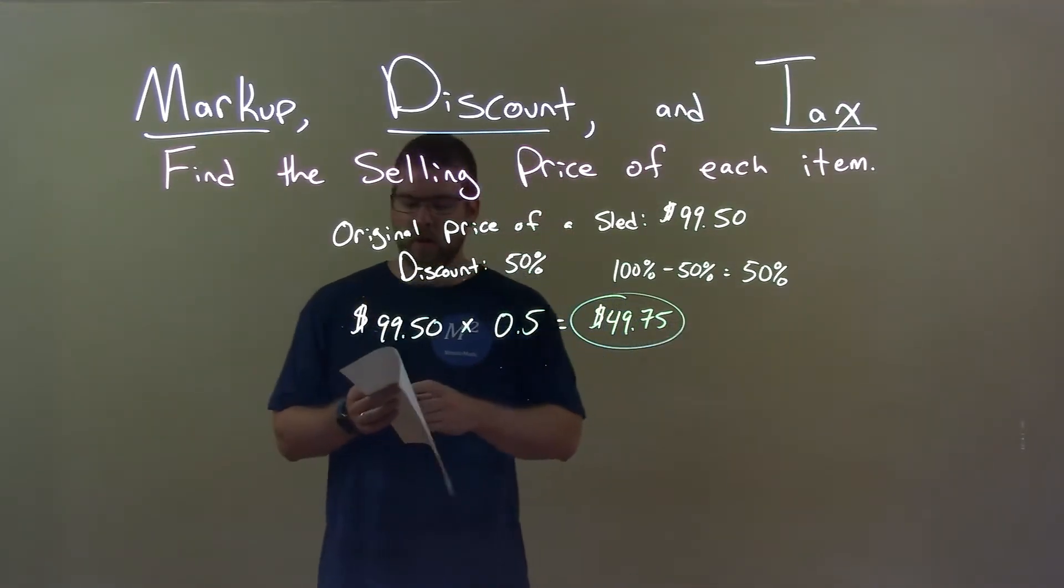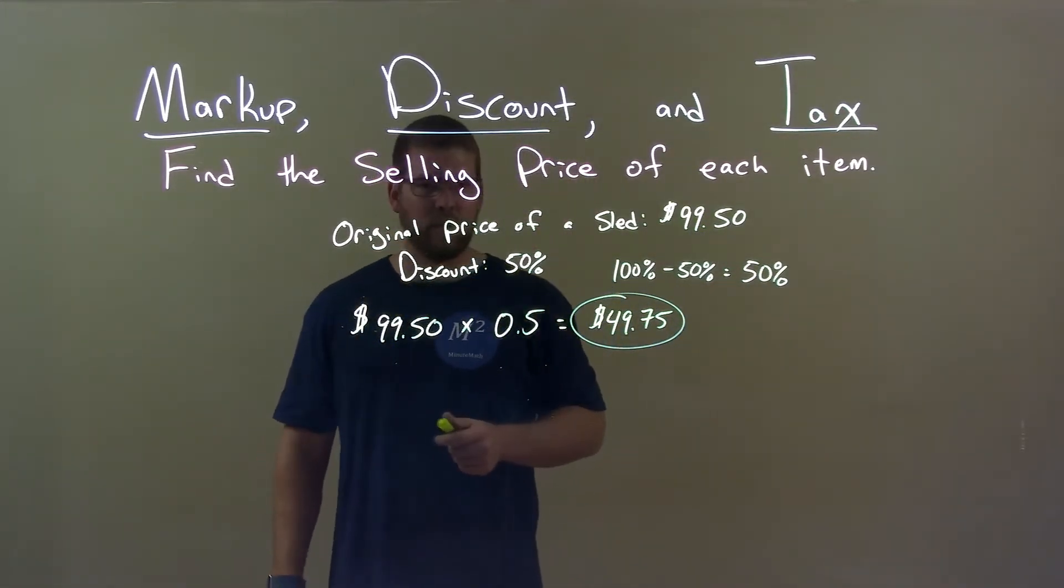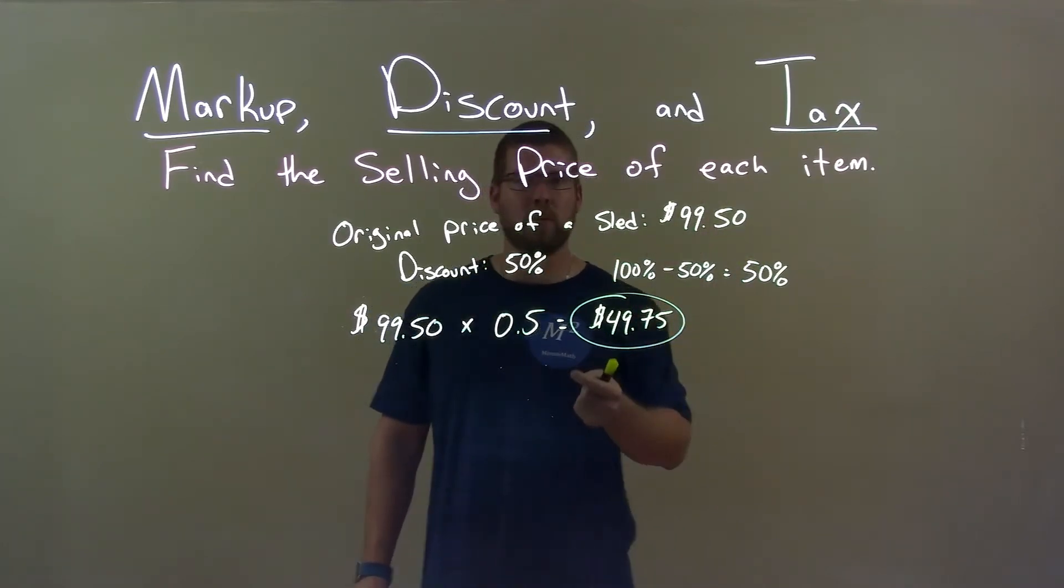Quick recap. We're given the original price of a sled is $99.50 and the discount is 50%. Well, we take 100% minus 50%, and it gives us 50% of the original purchase price that we will pay.